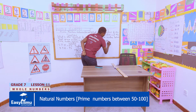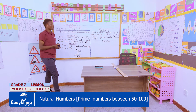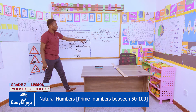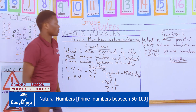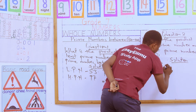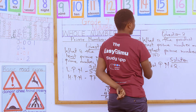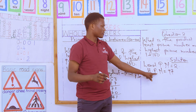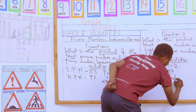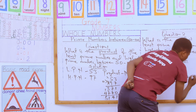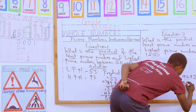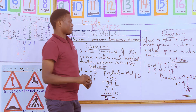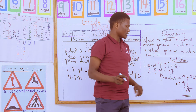The least prime number is always 2. And the highest prime number within the interval 1 to 100 is 97. So therefore the product will be 97 times 2, which implies 97 multiplied by 2. 7 times 2 is 14 — write 4, carry 1. 9 times 2 is 18, plus 1 is 19. So the product of the least prime number and the highest prime number between the interval 1 to 100 is 194.